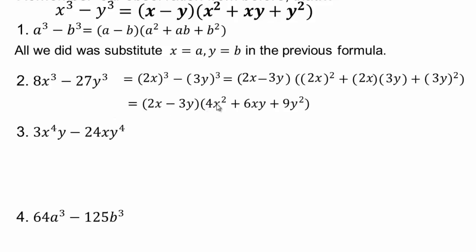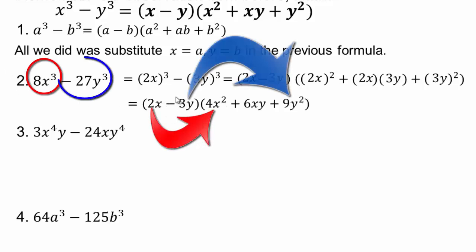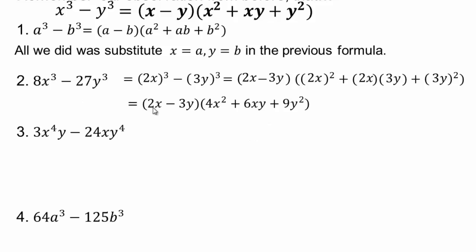Similarly, negative 3y times positive 9y squared gives negative 27y cubed. Once you have the first and last terms in the second bracket, the middle number is the product of those two: 2 times 3 is 6 and x times y is xy. If this is a minus sign then this is a plus sign. Those connections may make it easier to remember the formula. Try this next one — factor out the greatest common factor first, that's always your first step.